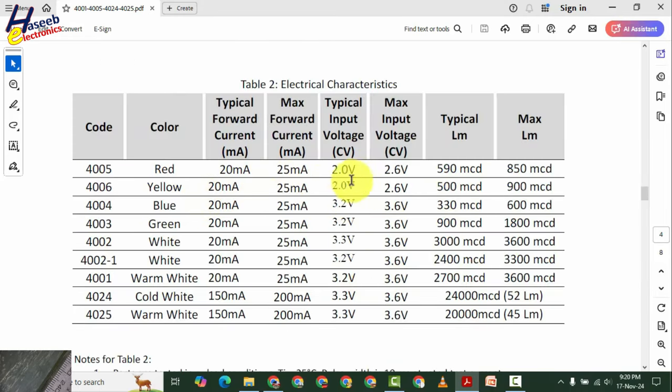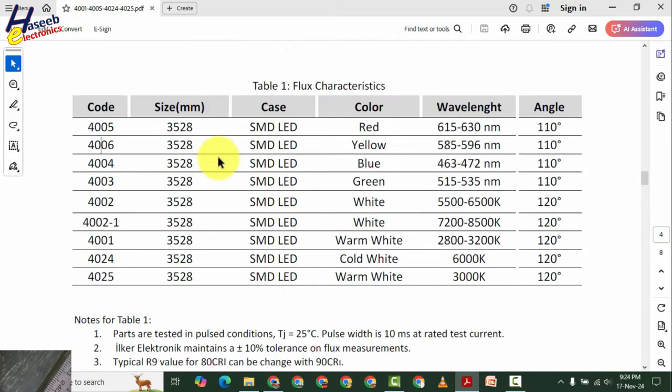So each LED is for 20mA. The working voltages are different. For blue LED 3.2V to 3.6V, red LED 2V, yellow 2V, blue 3.2V, green 3.2V. In this way we can find the size code and the LED color with view angle, and we can order using this number.